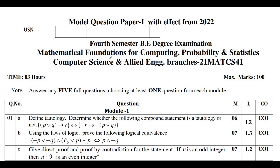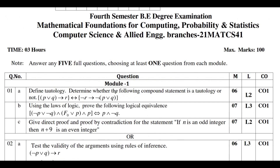Coming to today's session — in this session, I am discussing the model question paper for the computer science stream. I will be telling you how to score a minimum of 70 marks in this subject. It is very easy to score a minimum of 70 marks.